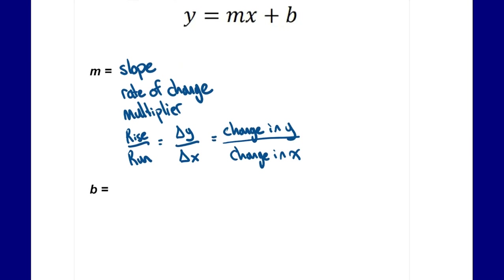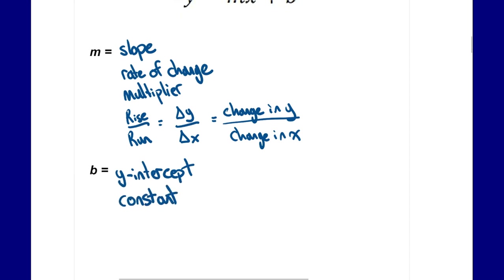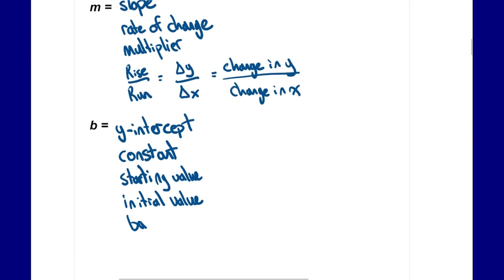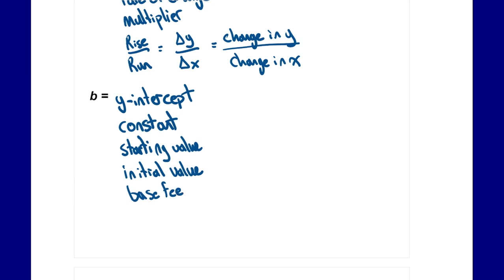b represents our y-intercept, but you may also know it as the constant, starting value, initial value, or base fee. There are different terms depending on what scenario you're looking at, but they all mean where we start from. So y-intercept, constant, starting value, initial value, base fee — all different terms for the b value.